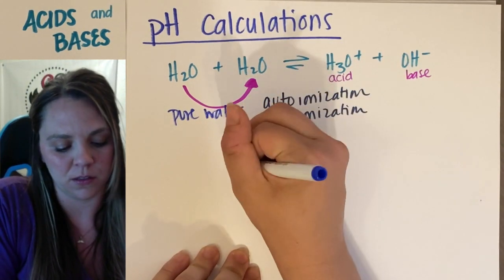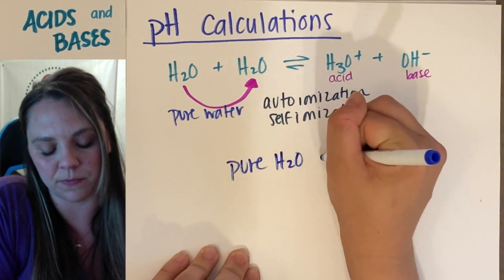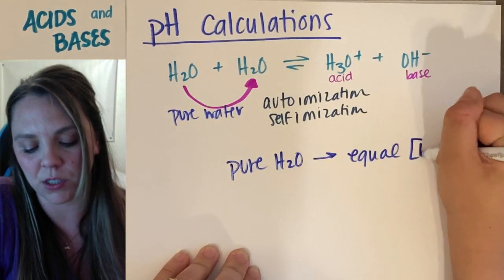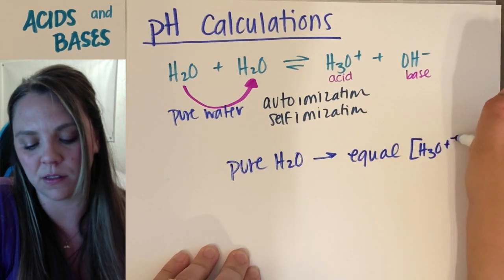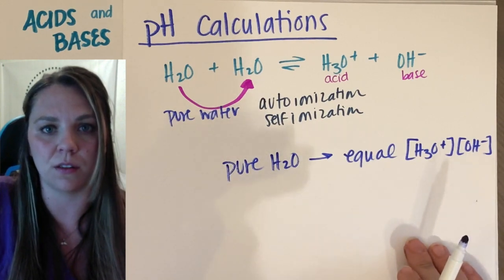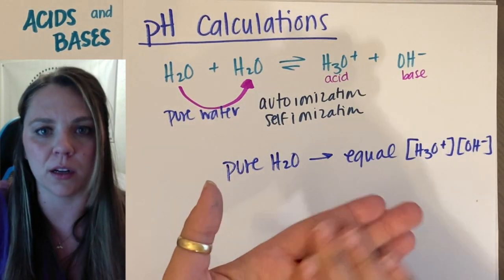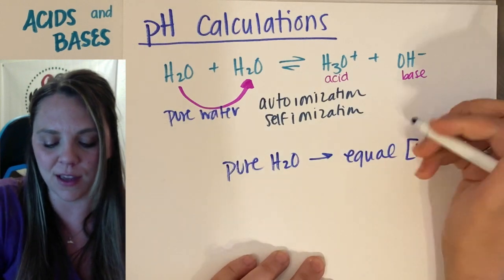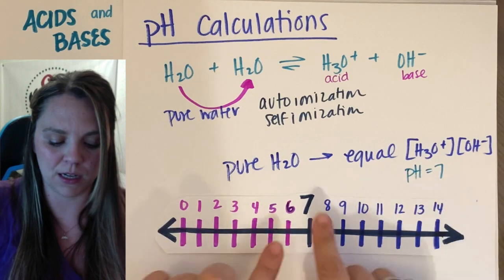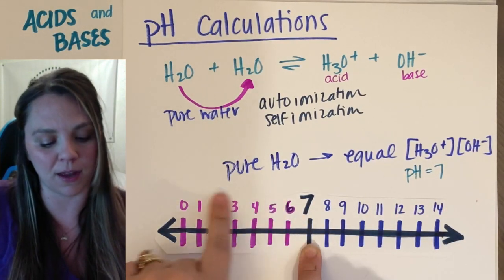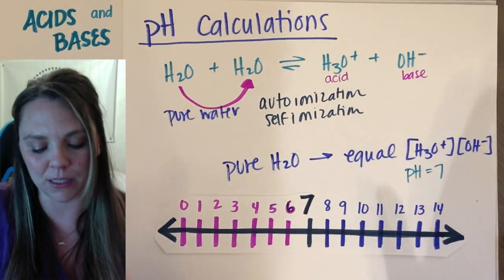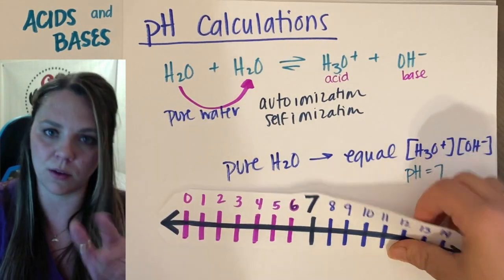Pure H₂O means I have an equal concentration of H₃O⁺ and OH⁻. Their concentrations are the same, which makes sense because pure water has a pH of 7. I don't have more hydroniums, I don't have more hydroxides — they're equal, which leads us to our first equation.